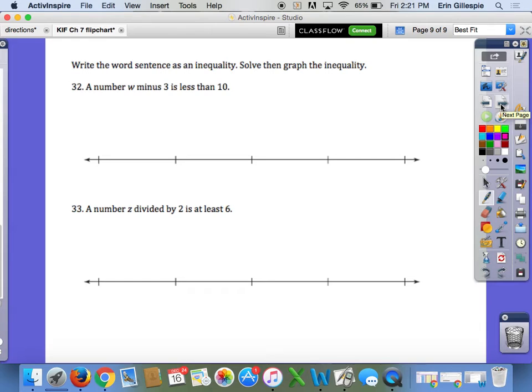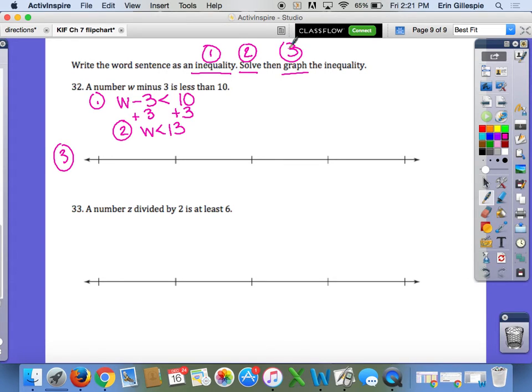Last two problems. Write the word sentence as an inequality, solve, then graph. Lots of things to do: write the inequality, solve it, graph it. A number W minus 3 is less than 10. That's your inequality. Step 2, solve it: add 3 to both sides, so W is less than 13. Step 3, your graph. Put your number on there with at least one number on either side. Less than means an open dot. W less than 13 means numbers less than 13 are solutions. So shade to the left. Your graph should look like that.